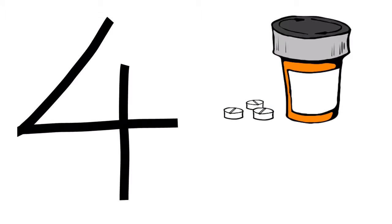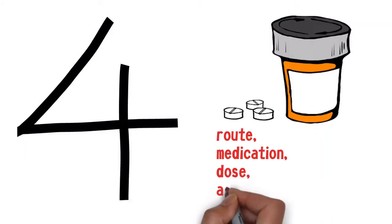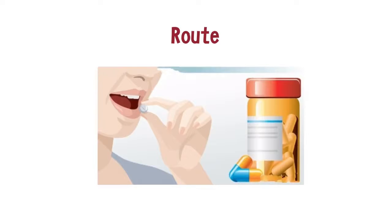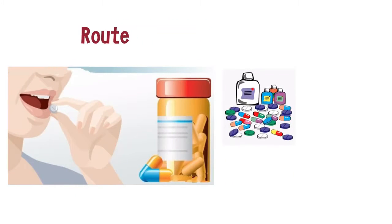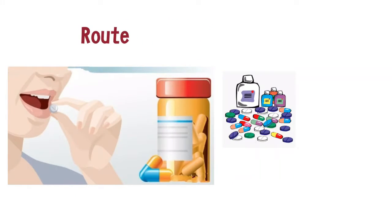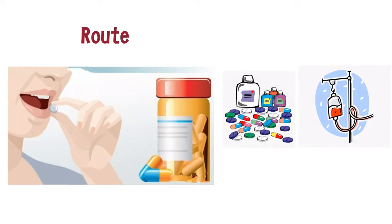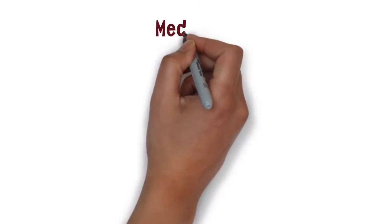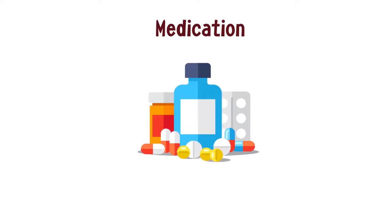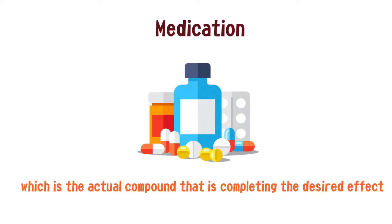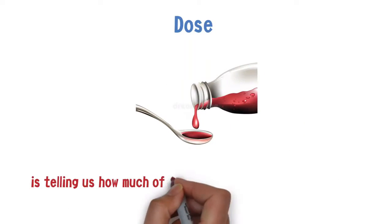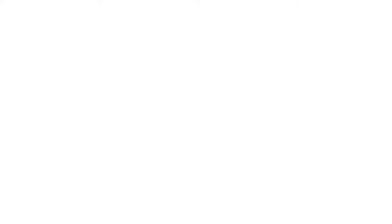The four main terms you would usually see when performing dosage calculations are route, medication, dose, and vehicle. The route is how the medication enters the body — for example, PO which is by mouth, IV which is intravenous, and topical such as creams and oils. The next term is medication, which is the actual compound completing the desired effect.